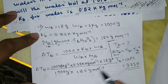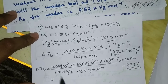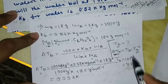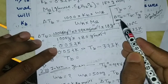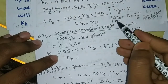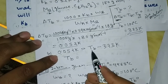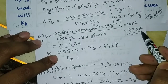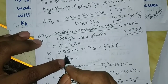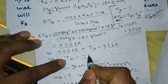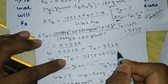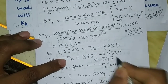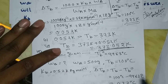ΔTb is equal to 0.052 Kelvin. Since ΔTb = Tb − Tb-not, and Tb-not for pure water is 373 Kelvin, we get Tb = 373 + 0.052 = 373.052 Kelvin. This is the boiling point of the glucose solution.